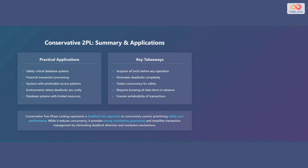Key takeaways include that conservative two-phase locking acquires all locks before any operation, eliminates deadlocks completely, trades concurrency for safety, requires knowing all data items in advance, and ensures serializability of transactions. In conclusion, conservative two-phase locking represents a deadlock-free approach to concurrency control, prioritizing safety over performance. While it reduces concurrency, it provides strong consistency guarantees and simplifies transaction management by eliminating deadlock detection and resolution mechanisms.